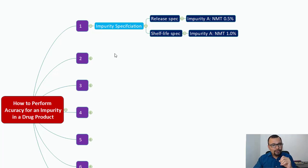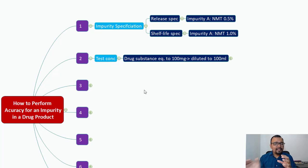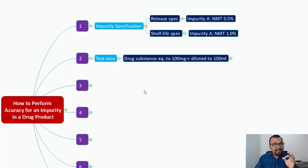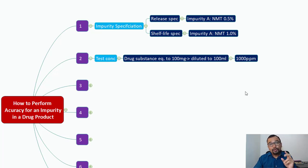The second important point is you need to understand the test concentration — how the test solution is prepared. Here is the example: drug substance equivalent to 100 mg is diluted to 100 ml. So what is the exact concentration in terms of ppm? It becomes 1000 ppm. So our test concentration is 1000 ppm. We now understand two important things: the specification for the impurity and the drug concentration in the test preparation.